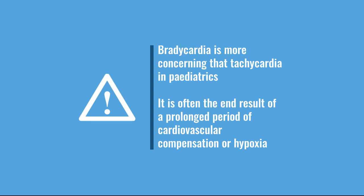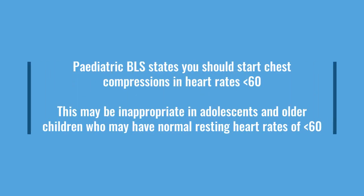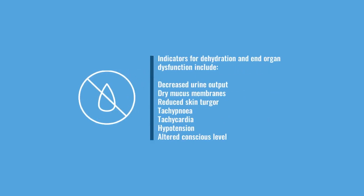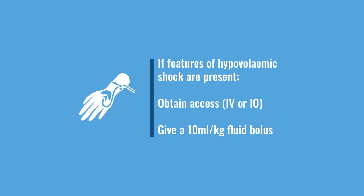Bradycardia is a terminal sign — you want to have called your seniors while the child is still tachycardic, not after. For any infant with a heart rate below 60, you should be starting chest compressions to maintain cardiac output. You don't want to be calling for help while doing compressions — everyone should already be there. The most common causes of circulatory failure in children are hypovolemia, whether from bleeding or severe diarrhea and vomiting, sepsis, and anaphylaxis. Clinical indicators of dehydration include decreased urine output, dry mucous membranes, decreased skin turgor, tachycardia, and altered conscious level.